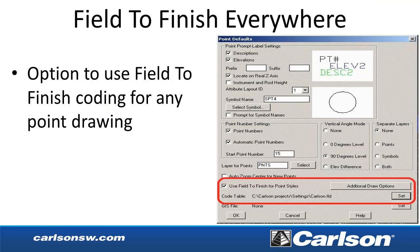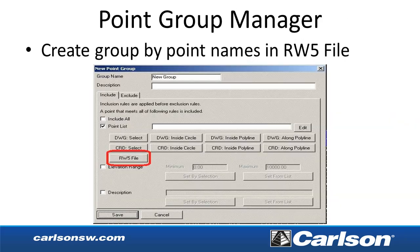In Carlson Survey, there's an option to use field-to-finish coding for all commands that draw points. Under point defaults, there's a new 'Use Field to Finish' option that applies the full drawing properties of field-to-finish — not just selected things like layer or symbol, but the full field-to-finish coding processing. In Point Group Manager, we also added the option to create a point group using the point names of a raw file.